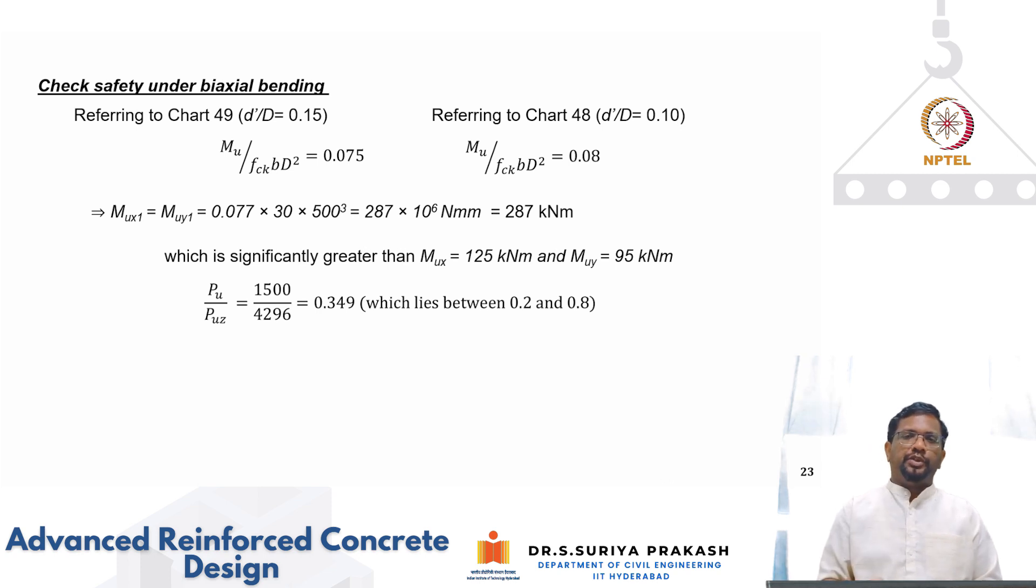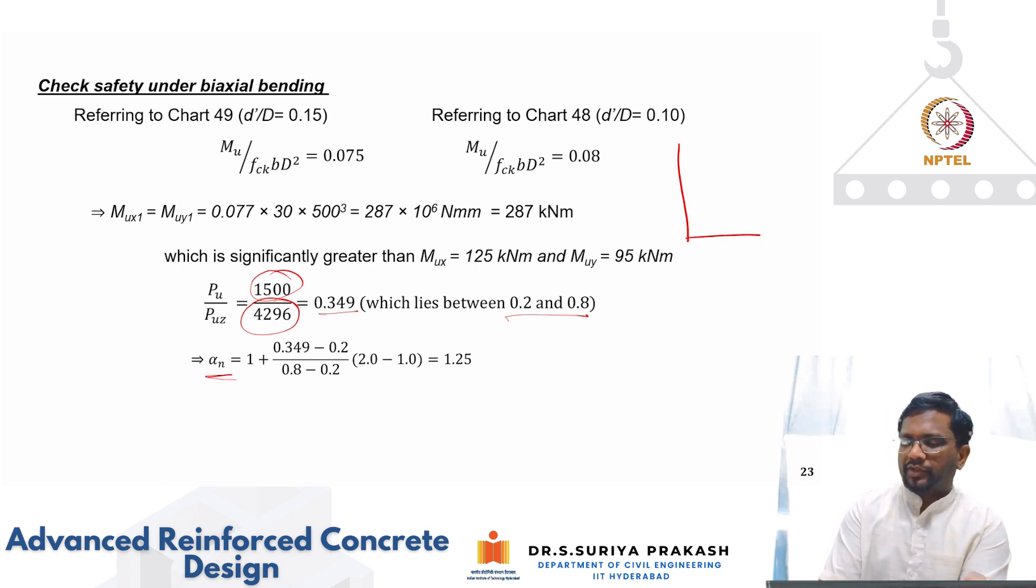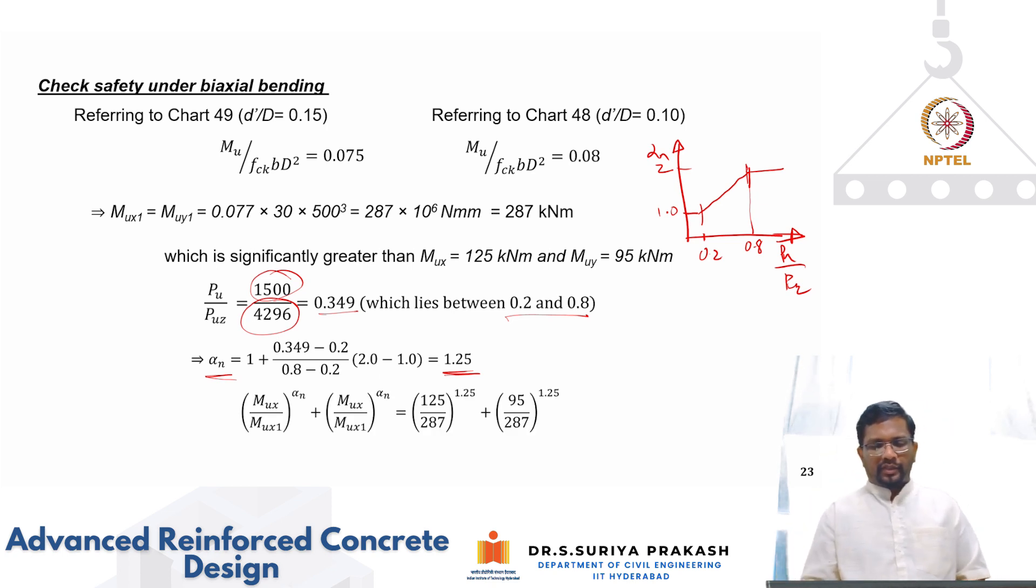Then you get your ratio of Pu by Puz which is 1500 to pure compression capacity is 0.35 which lies between 0.2 and 0.8. Then we go back and calculate our alpha_n. So alpha_n, here you put Pu by Puz up to 0.2 it is 1, and then it becomes linear, and then it becomes constant. So in our case this is 0.349, so for that alpha_n is 1.25. And once we got all the capacities, you go back and check whether it is within this load contour equation or not. And you find that this is 0.65 which is less than 1. It is very safe. In fact this design is not a very optimal or economical design, it is a very conservative design.